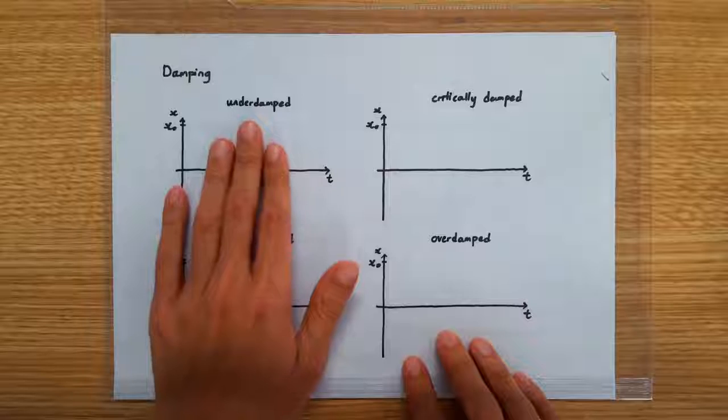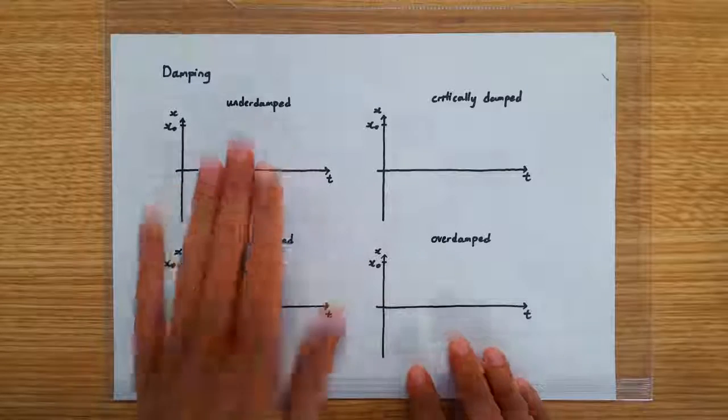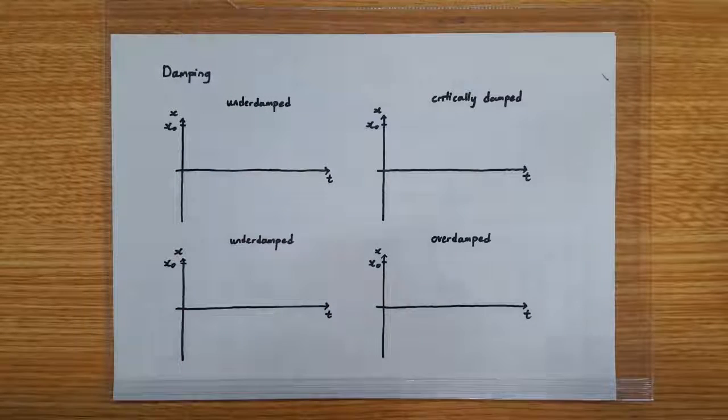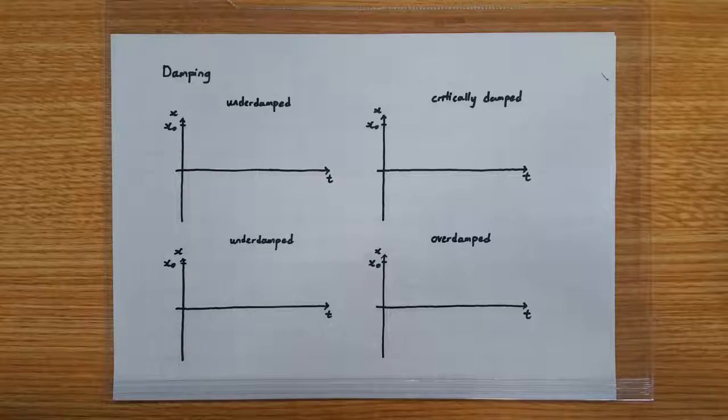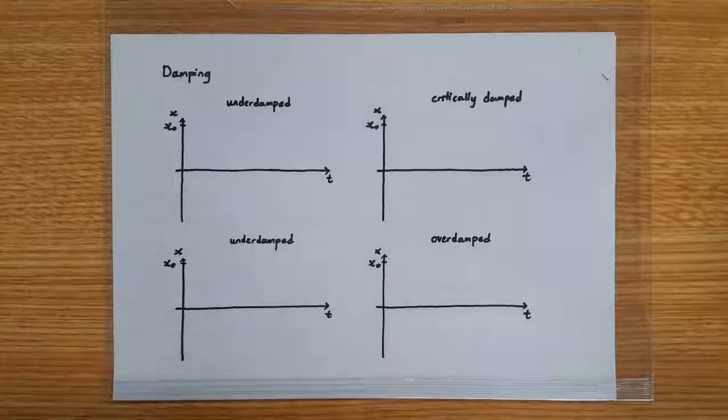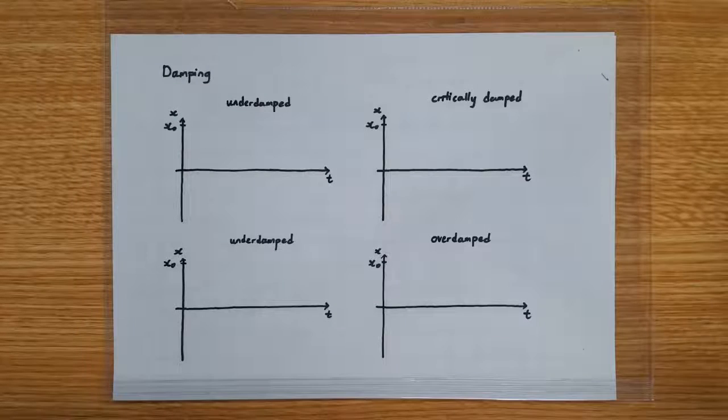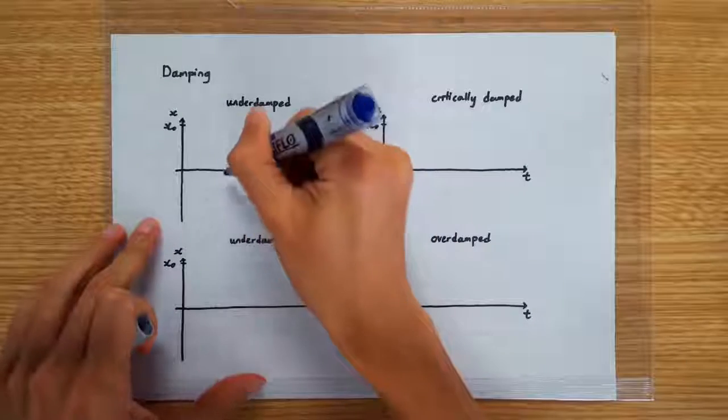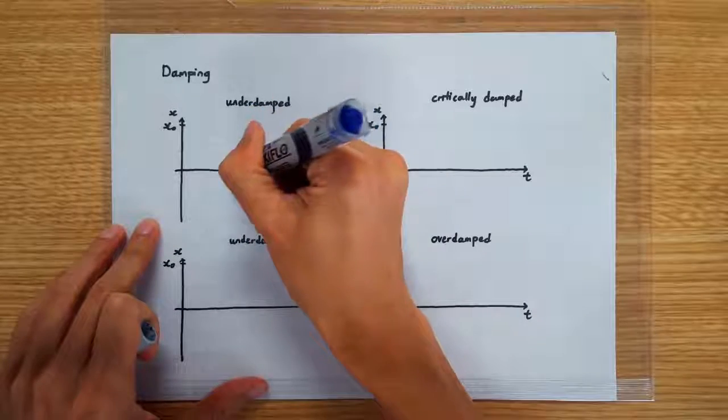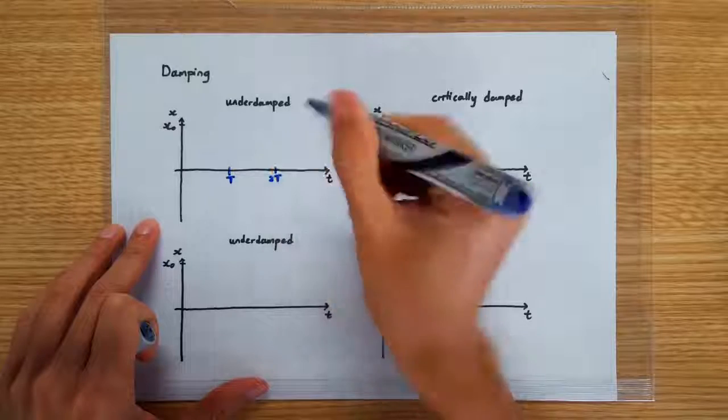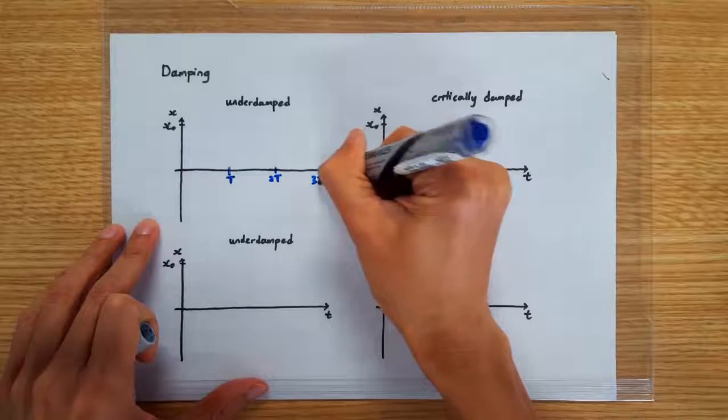We'll start off with the under-damped oscillation. To sketch a damped oscillation, there are two things we have to do first. First, we mark out equal time intervals, correspond to one period, two periods, and three periods, and so on.